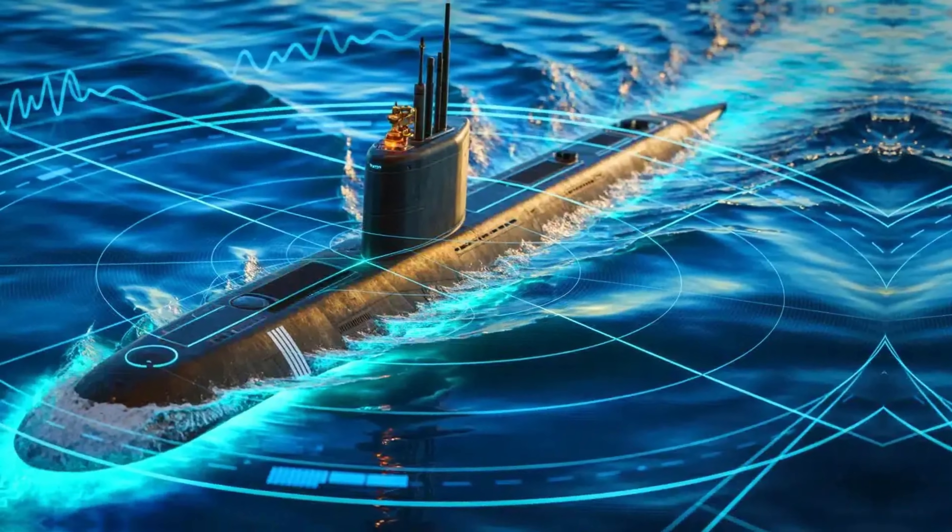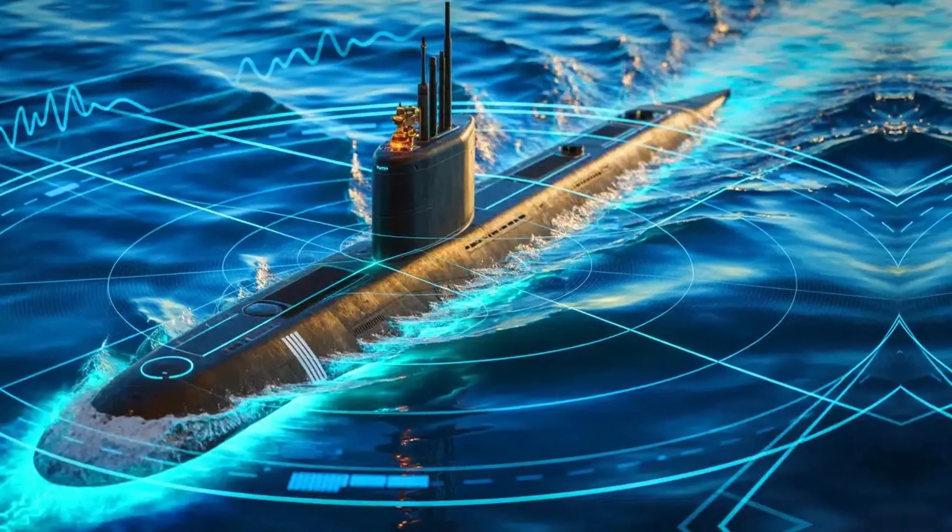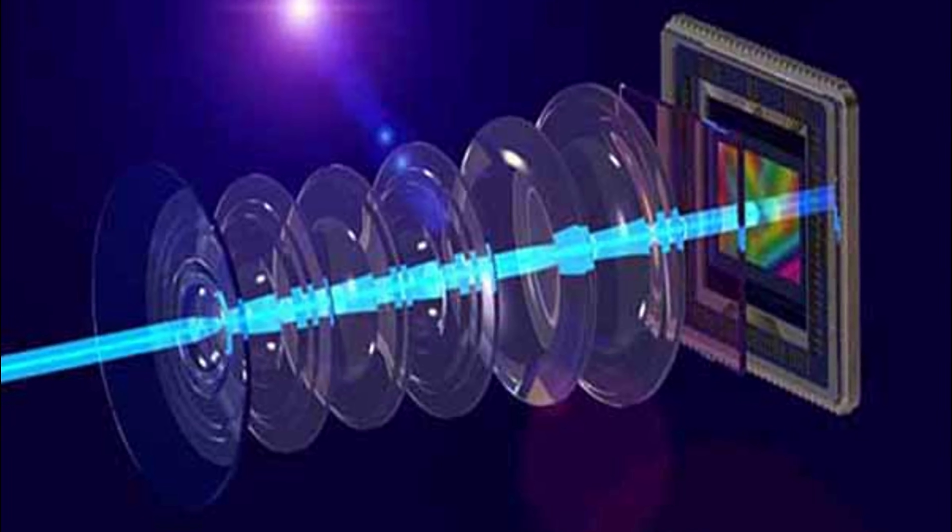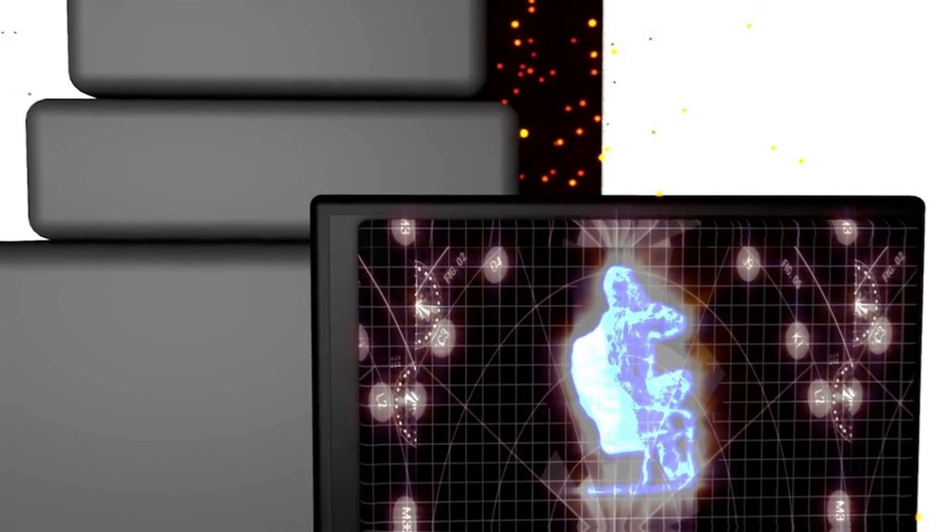Coatings that make objects invisible to radar. This dominance unlocks everything else. Quantum sensors that can detect submarines hundreds of miles away. Photonic sensors that see through walls, through weather, through darkness. These aren't concept drawings. They're operational right now.